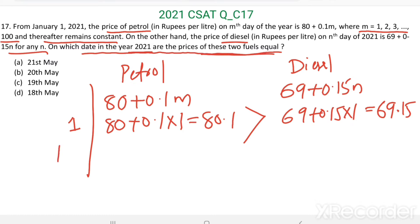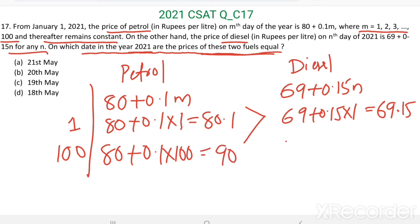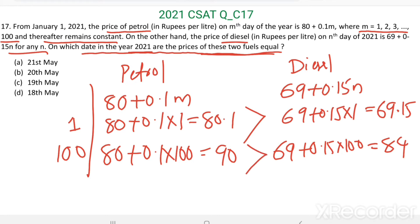When n equals 100, the price of petrol is equal to 80 plus 0.1 times 100. Since 0.1 times 100 equals 10, we get 80 plus 10 equals 90. For diesel, we have 69 plus 0.15 times 100. Since 0.15 times 100 equals 15, we get 15 plus 69 equals 84.